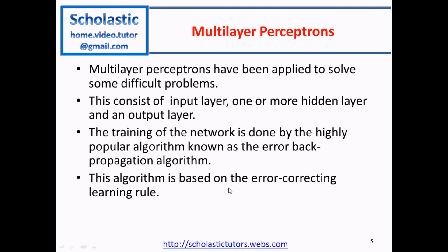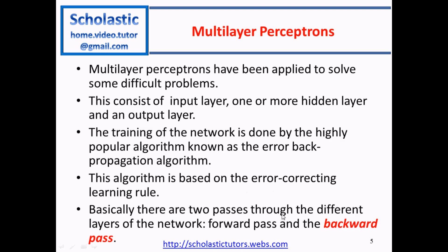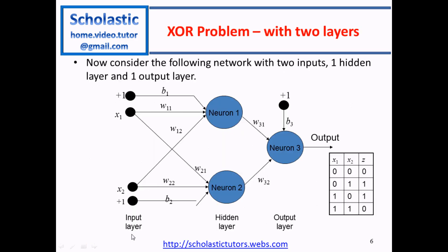This algorithm is based on the error-correcting learning rule. Basically there are two passes through the different layers of the network: a forward pass and a backward pass. Let us look at the XOR problem with two layers. These are the two layers — a hidden layer and an output layer. The input layer is normally taken as the input, so you normally consider it as a two-layer system: hidden and output layer.